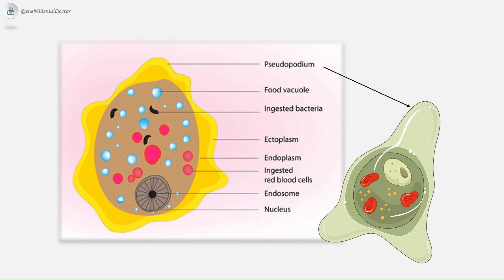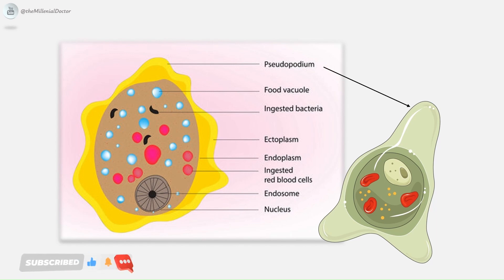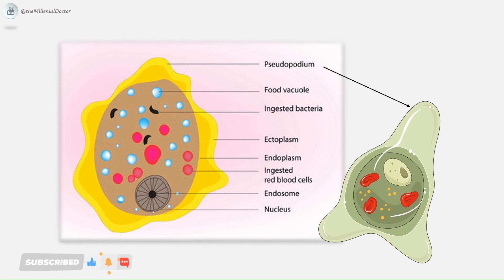Pseudopodia are finger-like projections formed by sudden jerky movements of ectoplasm in one direction, followed by streaming of the whole endoplasm. Typical amoeboid motility is a crawling or gliding movement, not a free-swimming one. The direction of movement may change suddenly, with another pseudopodium formed at a different site, and the whole cytoplasm flows in the new direction. Pseudopodia formation and motility are inhibited at low temperatures.